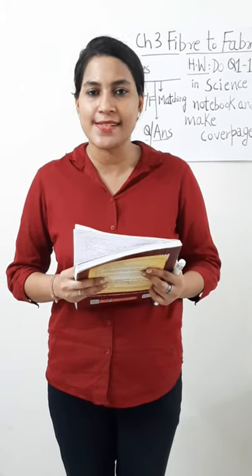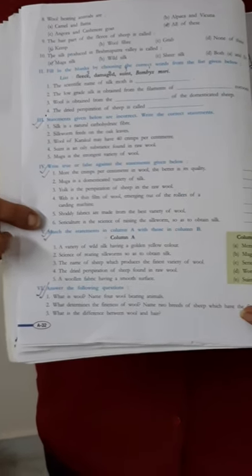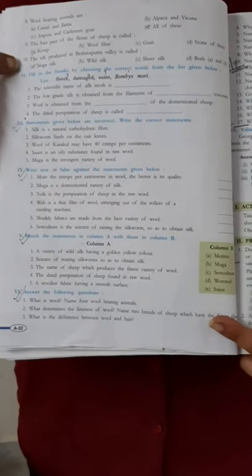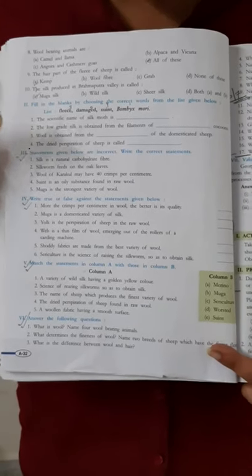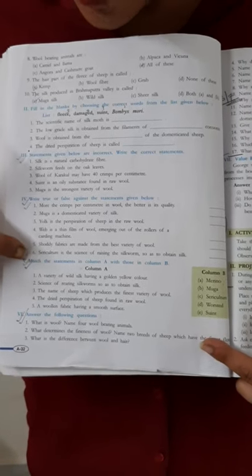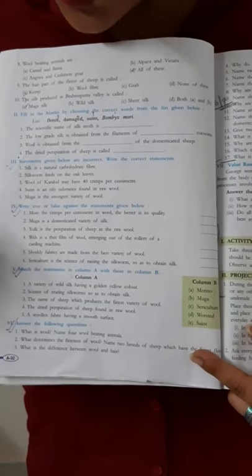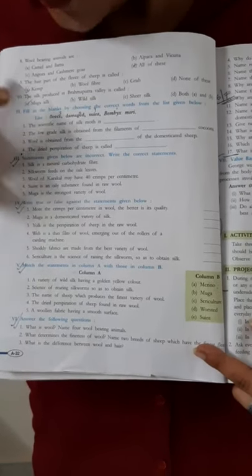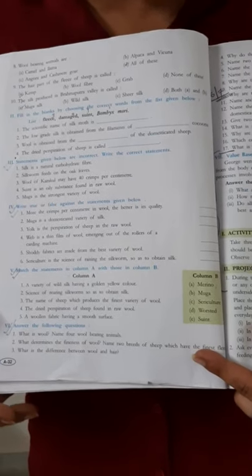Let's start with the exercises. I am going to show you which exercises we are going to discuss. I have already told you about them, but I am going to show you the book also. Just look on page number A-32, in which we have fill in the blanks completed. Now in today's session, I am going to cover: the statement correction question, write the correct statements — that is question three; then question four, write true and false; fifth, match the statement with column A and B; sixth question, answer the following questions. You are going to get these questions on page number A-32.